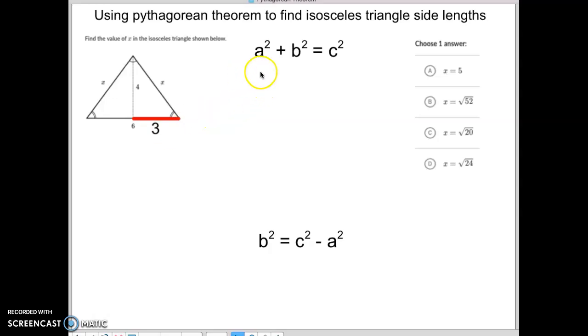At which point, we simply take the 3 and we square it. 3 squared plus 4 squared will equal our x squared. 3 squared is 9, 4 squared is 16, 16 plus 9 is 25. So, 25 equals x squared. So, then we take the square root of both sides, and we get 5 equals x. So, it's letter a.